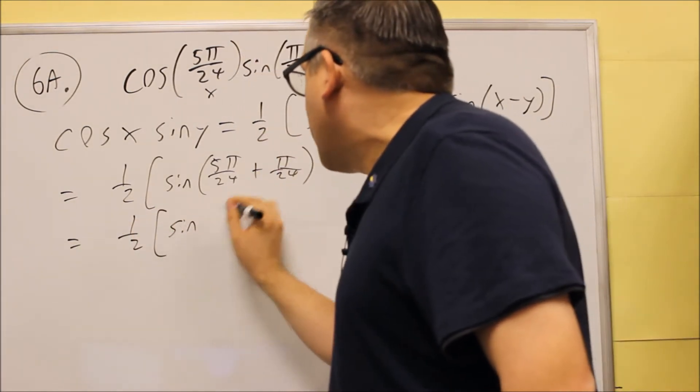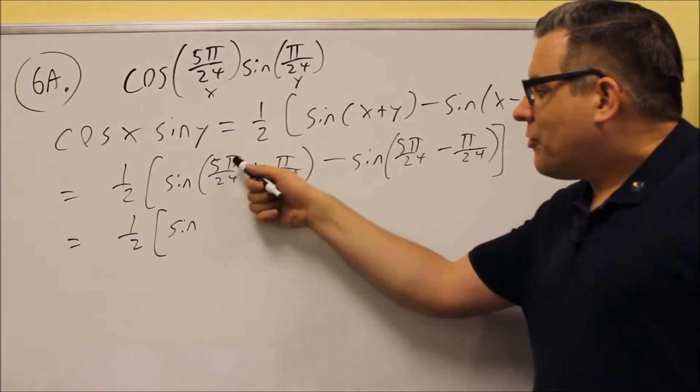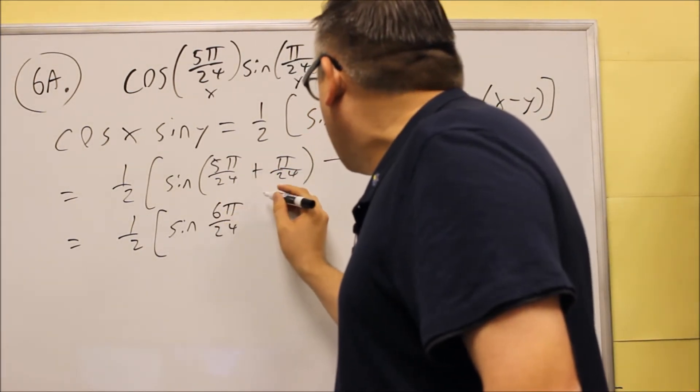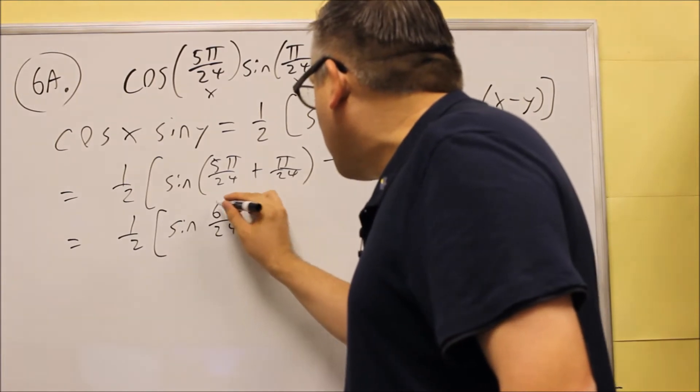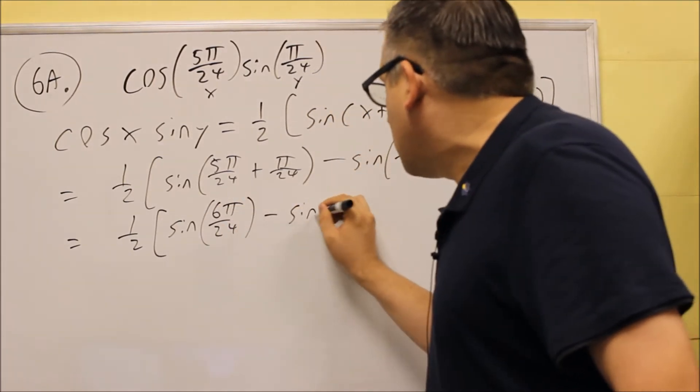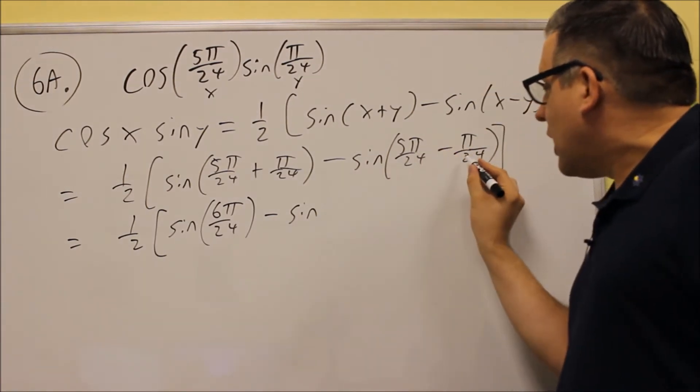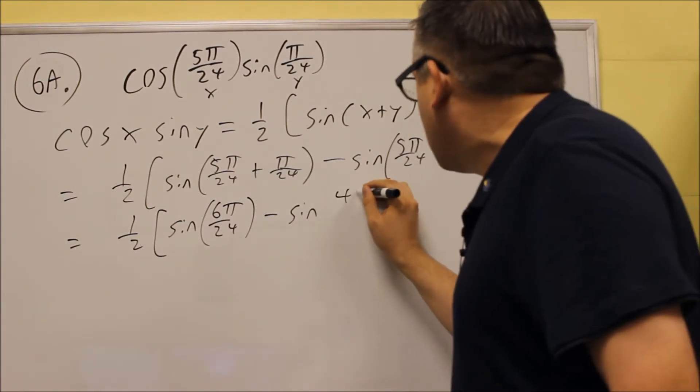So inside here we've got sine of 5π plus π, that's 6π over 24. And then we have minus sine, this is still inside the brackets, 5 minus π, you'll get 4π over 24.